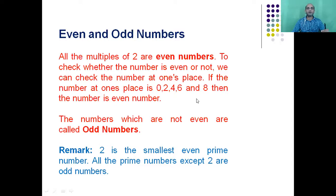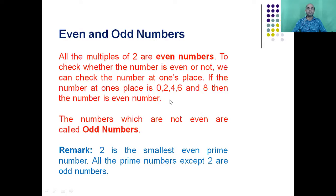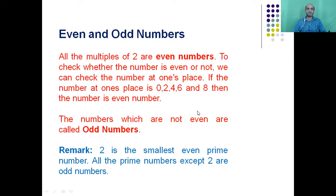Since childhood we know what is odd and even. Let me relate it to our studies. When pollution was at a high level in Delhi, the government started the odd-even rule for vehicles to control it. It means if the last digit of the vehicle number is 2, 4, 6, 8, or 0, those are called even numbers. Others — 1, 3, 5, 7, 9 — are called odd numbers.